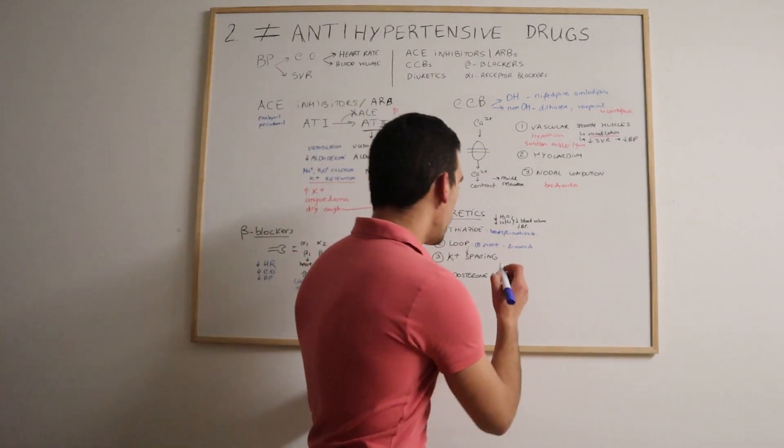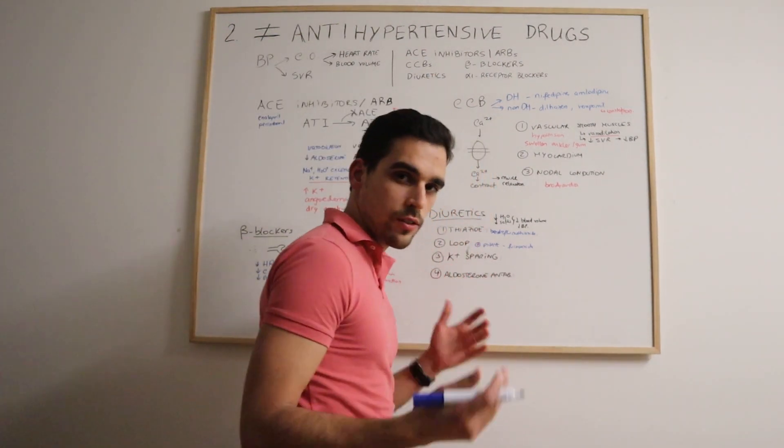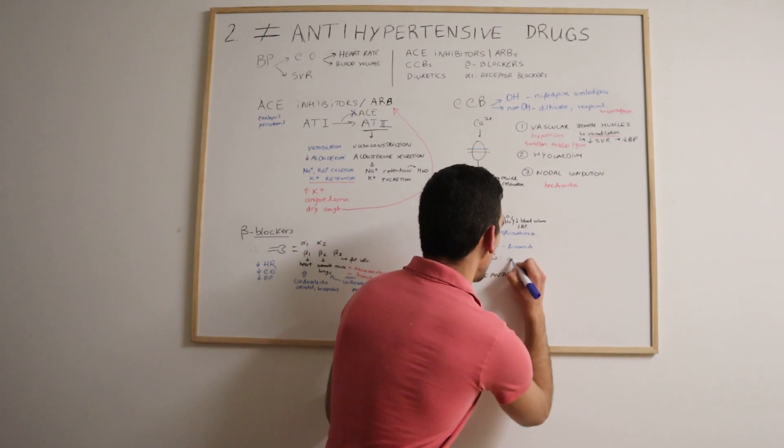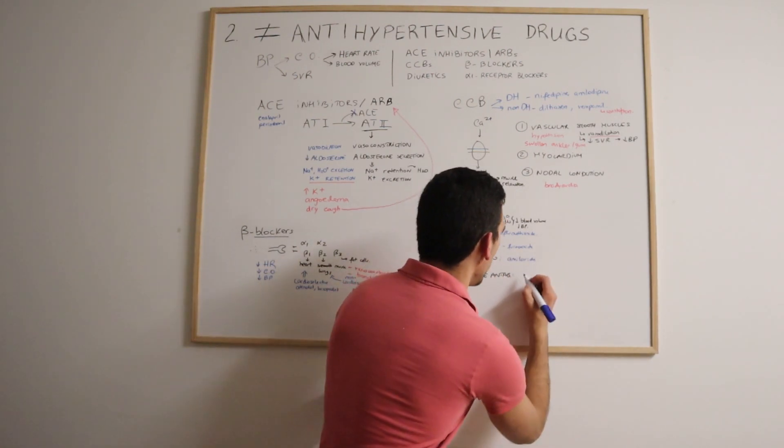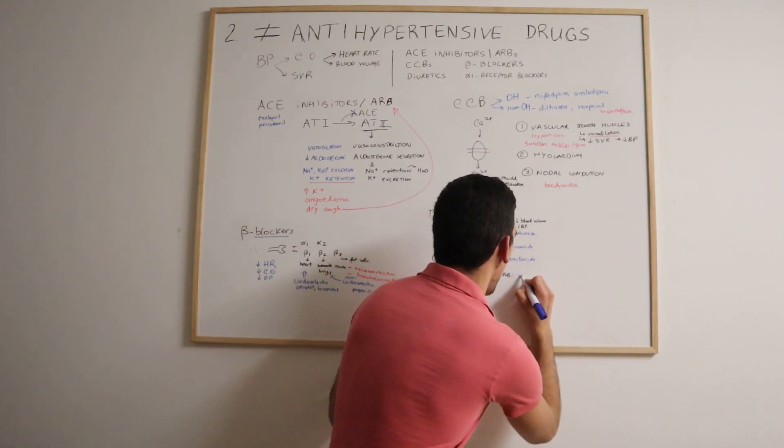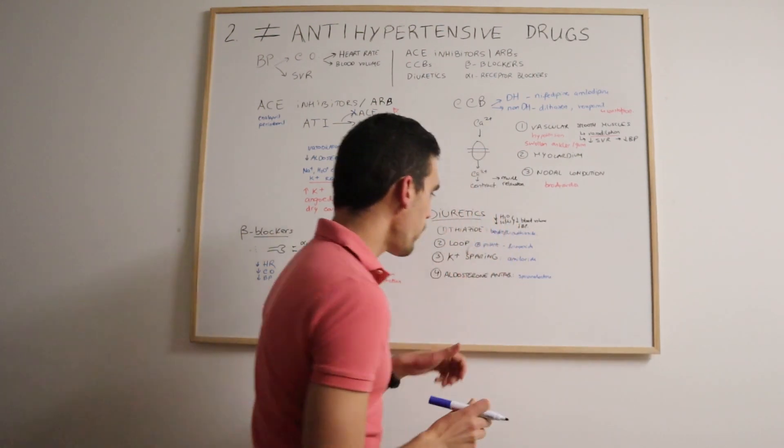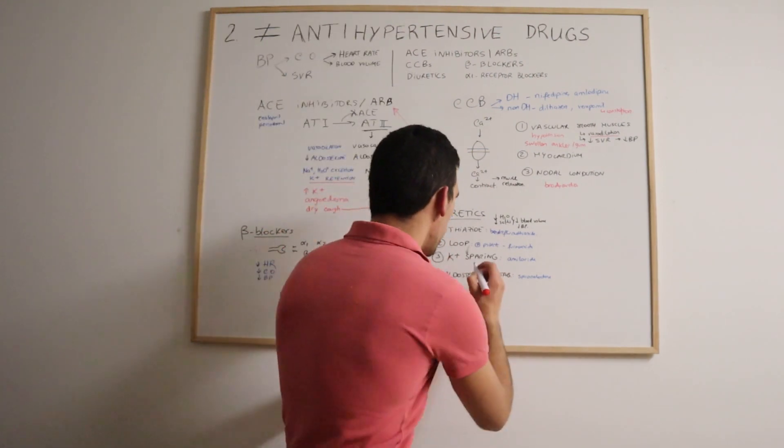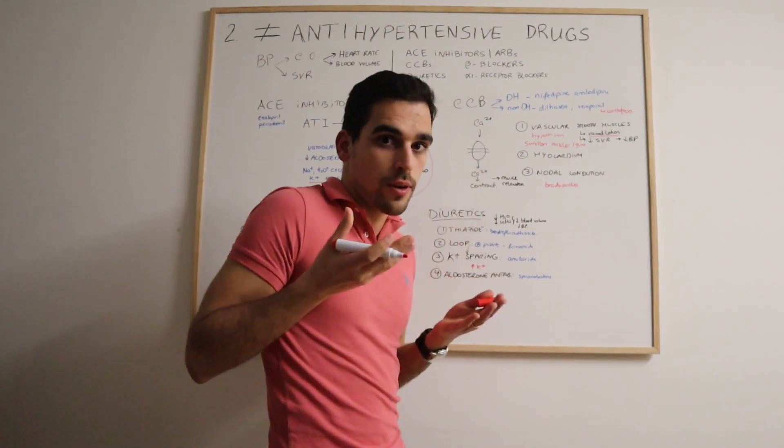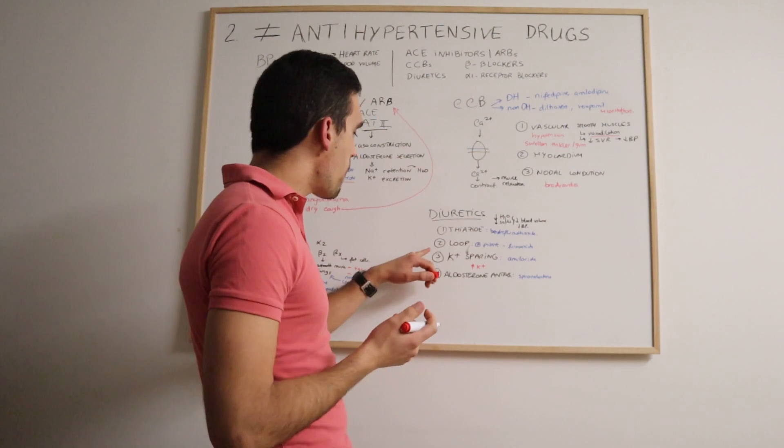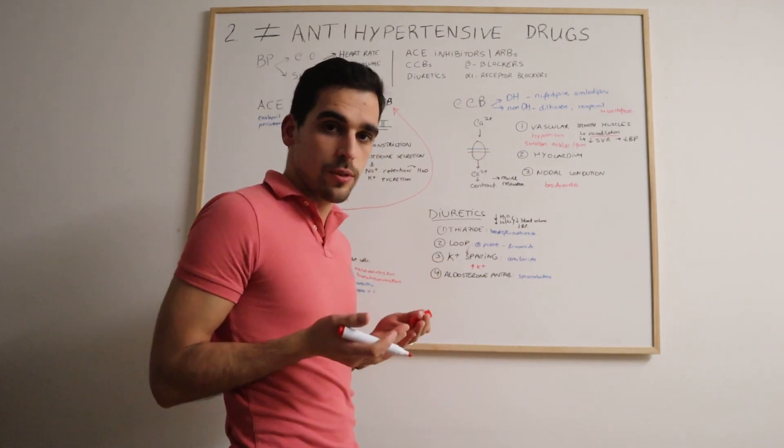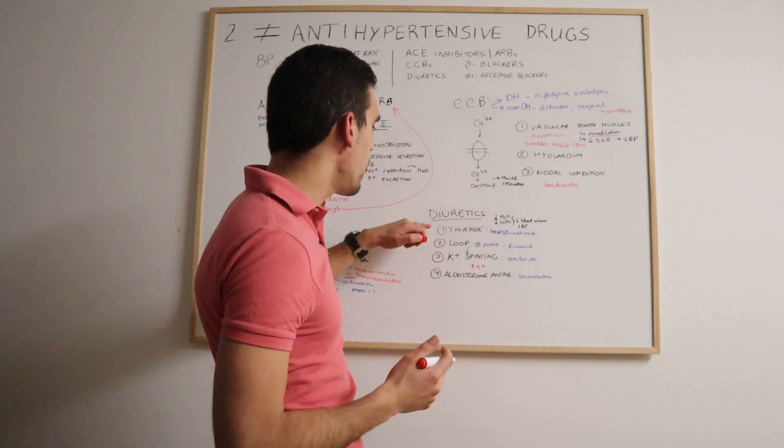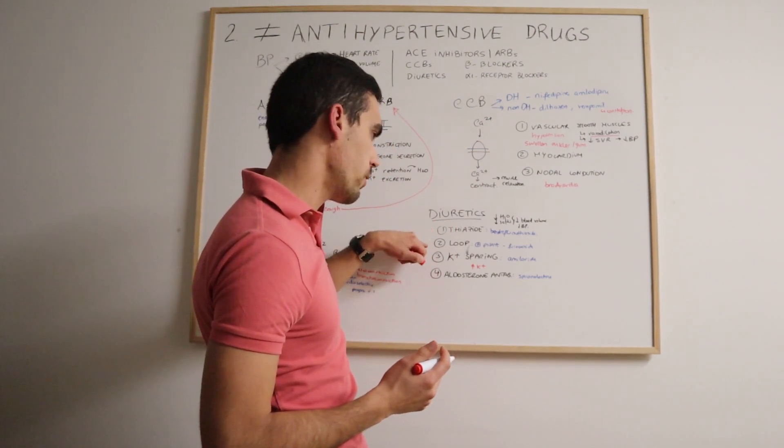Then we have the potassium-sparing and aldosterone antagonists, which get rid of the water and sodium but they keep potassium. Potassium-sparing example is amiloride, and aldosterone antagonist example is spironolactone. In terms of side effect profiles, these two keep the potassium, so one possible side effect is hyperkalemia. That should be kept in mind. But sometimes, because they keep the potassium, they can be associated with the first two, because the first two get rid of the potassium, kind of a counterbalance system. These two can be associated with thiazide and loop diuretics.